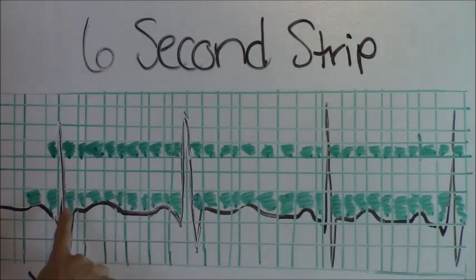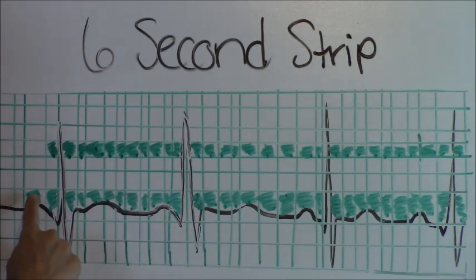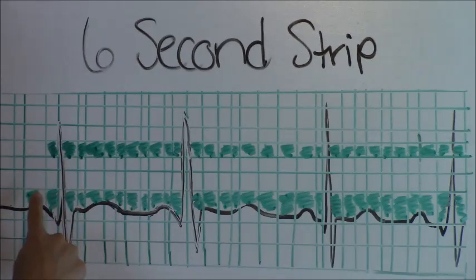So to use the 6 second rule, we're going to start right where the P wave is and start measuring the large squares and count until we get to 30 and stop and see how many P waves are in between those 30 squares. So let's start counting.